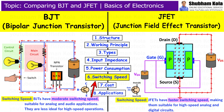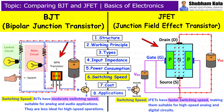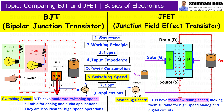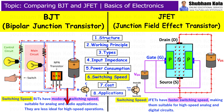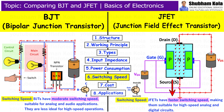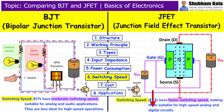Next is Switching Speed. When it comes to switching speed, BJT and JFET behave differently. BJT has moderate switching speed, which is sufficient for most analog applications, but may not be ideal for high-speed operations. JFET has faster switching speed compared to BJT, making it suitable for high-speed analog circuits and digital circuits.